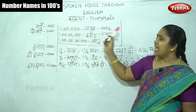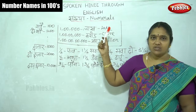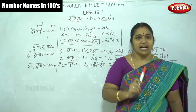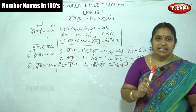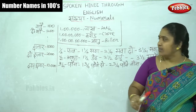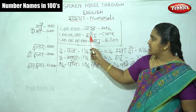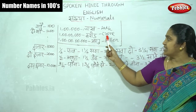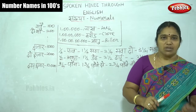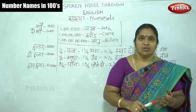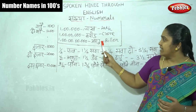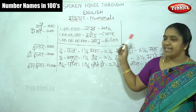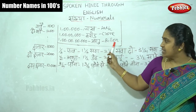100 Hazar is also called lakh — in Hindi we say Ek Lakh, Do Lakh, Teen Lakh, Chaar Lakh. The next unit is Karod, which in English is crore — one crore, two crore. Extending further, we reach Arab, which means billion.